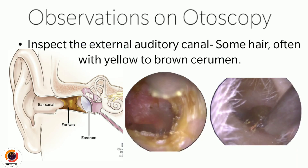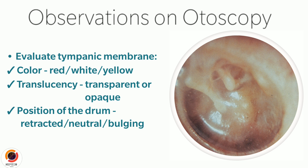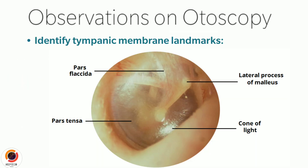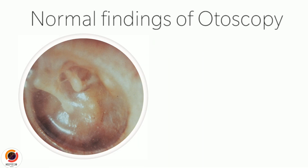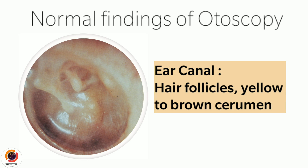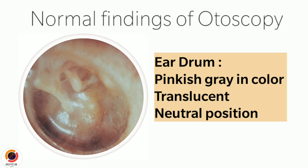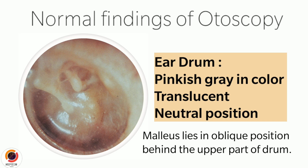When inspecting the external auditory canal, some hair often with yellow to brown cerumen is normal. When evaluating the tympanic membrane, note the colour — whether it's red, white, or yellow — translucency from transparent to opaque, and the position of the drum — whether it's retracted, neutral, or bulging. Identify the pars tensa with its cone of light, the handle and short process of malleus, and the pars flaccida. In normal findings of otoscopy, the auditory canal has some hair with yellow to brown cerumen, and the eardrum is pinkish grey in colour, translucent, and in neutral position. The malleus lies in an oblique position behind the upper part of the drum.